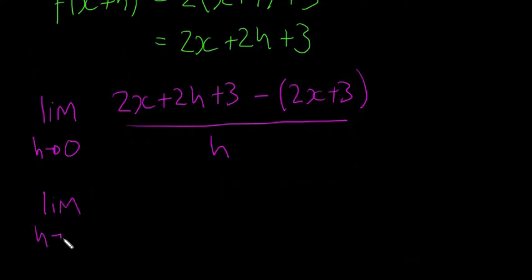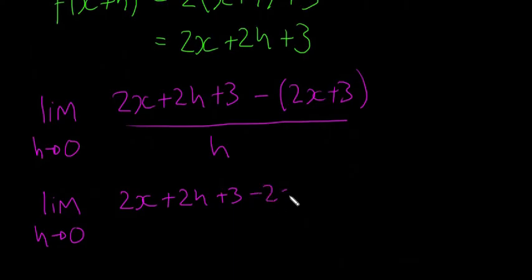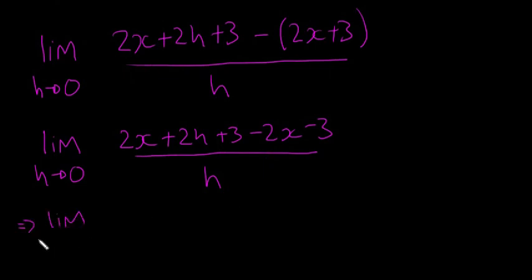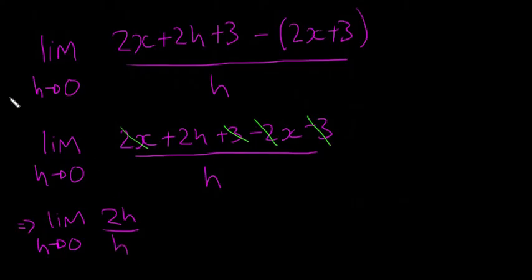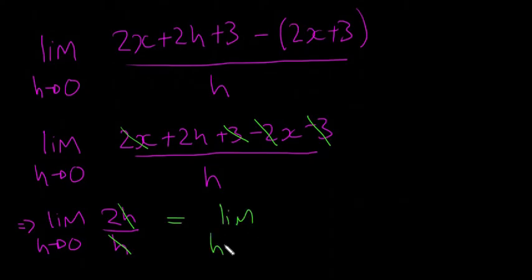You have to keep writing 'limit as h approaches 0'. This is going to be 2x + 2h + 3 minus 2x minus 3, divided by h — because when you have a minus on the outside of brackets, both terms change sign. The 2x cancels with the minus 2x, and the plus 3 cancels with the minus 3. So we're left with 2h over h. The h's cancel, giving us the limit as h approaches 0 of 2. There's no h anywhere, so it's just equal to 2.